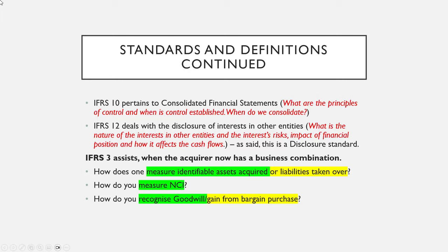IFRS 12 deals with the disclosure of interest in other entities. What's the nature of this interest in another entity? What are the entity's risks? What is the impact on the financial position of the entity? And how does it affect cash flows? It's a disclosure standard, similar to IFRS 7, which discloses the financial instruments of IFRS 9. IFRS 12 is the disclosure standard of interest in other entities.